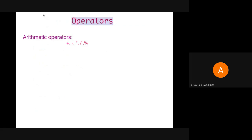Next is operators. The first set of operators is the arithmetic operator. Arithmetic operators include addition, subtraction, multiplication, division, and the modulus operator, which is denoted by the percentage symbol. Whenever we say x modulus y, it gives us the remainder when x is divided by y.